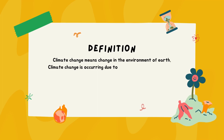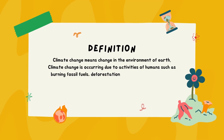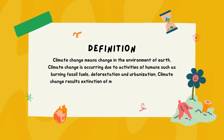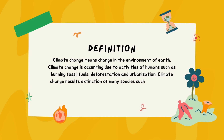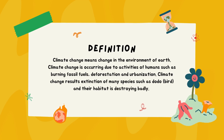Climate change is occurring due to activities of humans such as burning fossil fuels, deforestation, and urbanization. Climate change results in the extinction of many species such as the dodo bird, and their habitats are being destroyed badly.